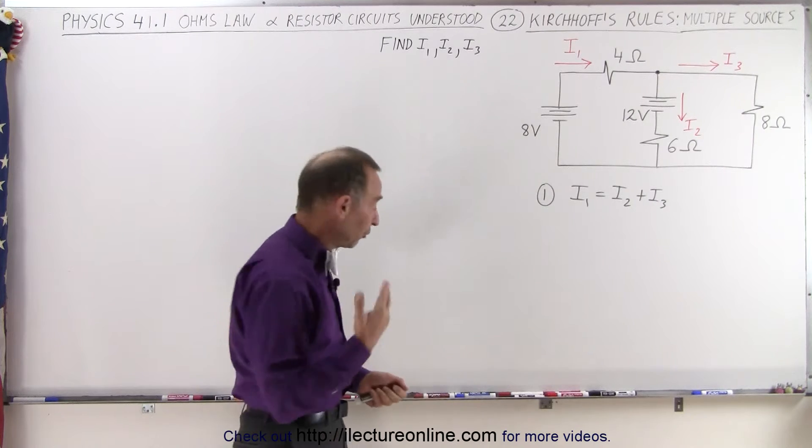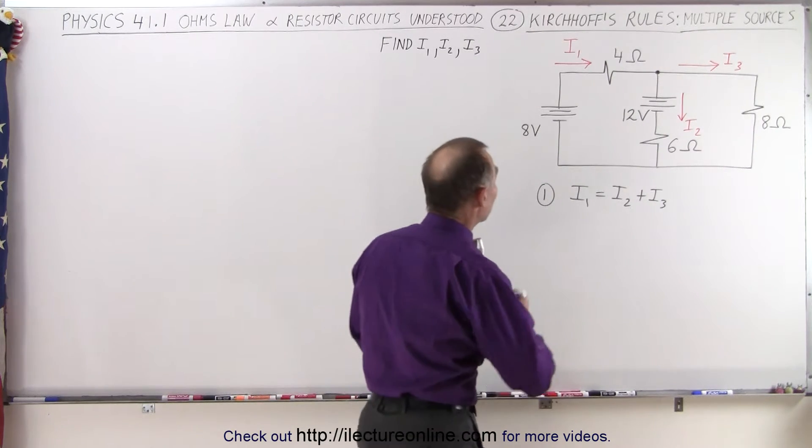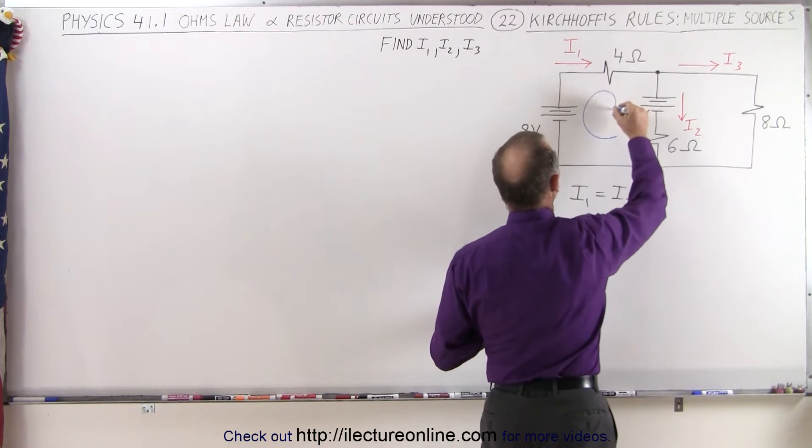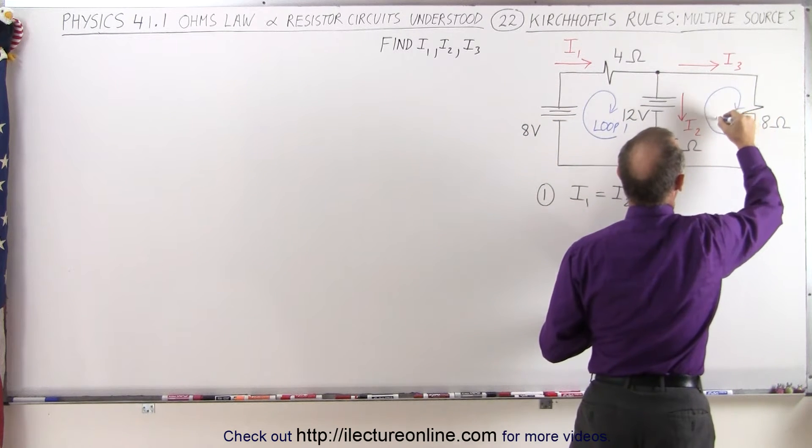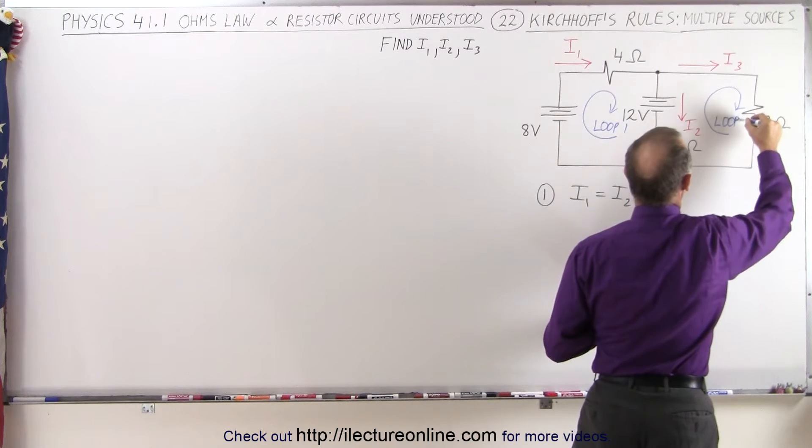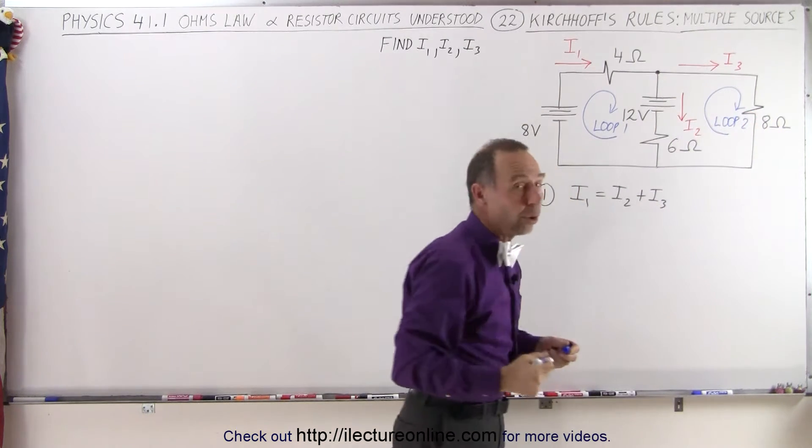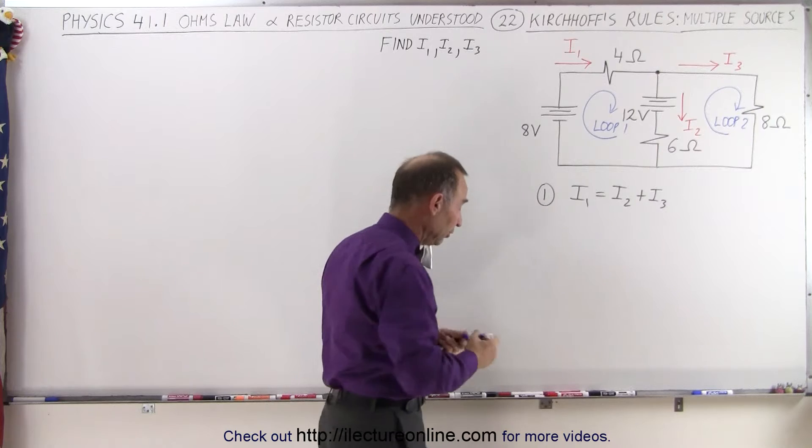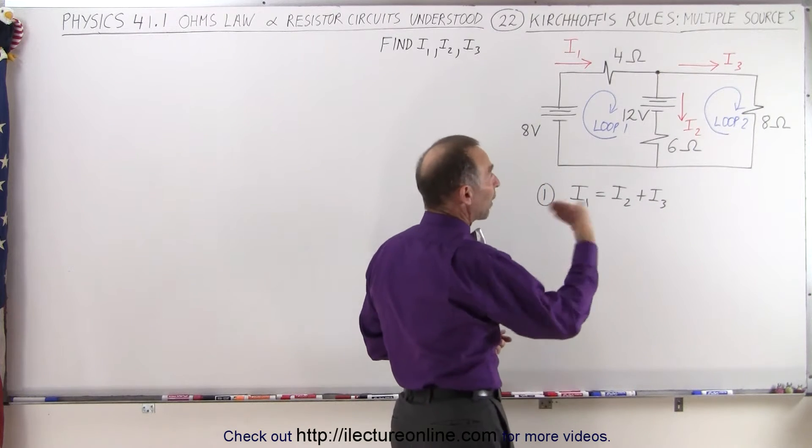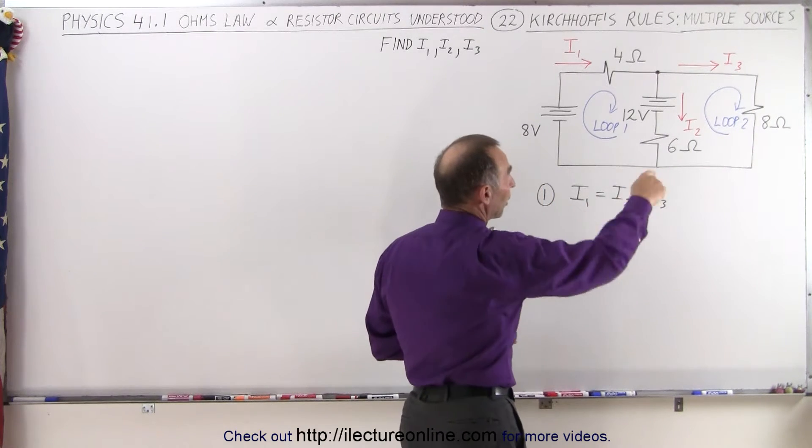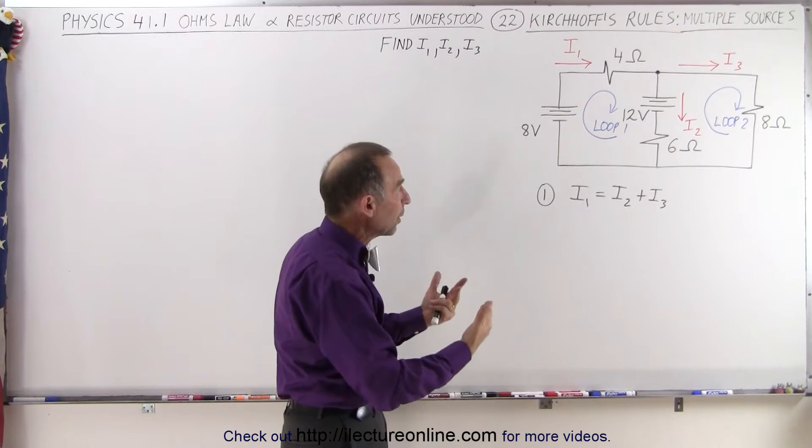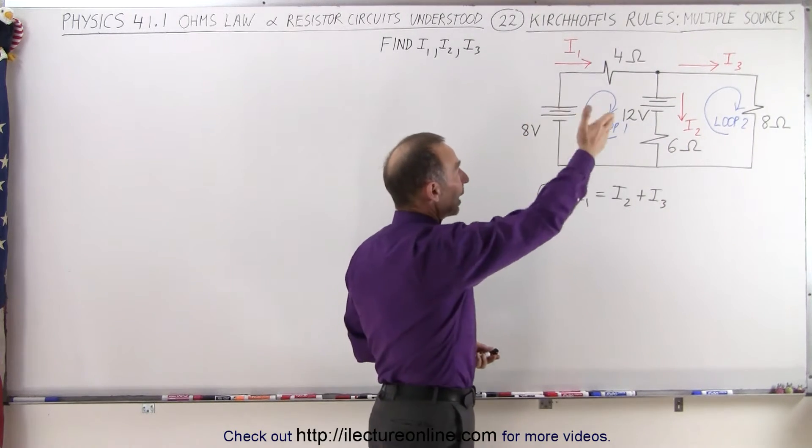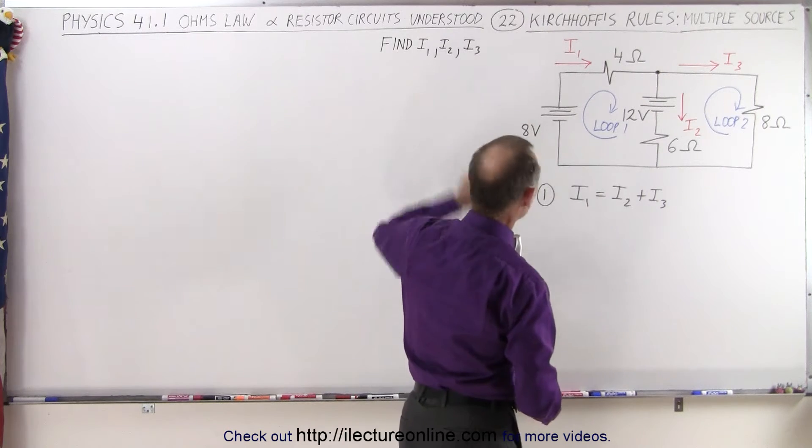We need two more equations. So for that, we need the two loop equations. Let's call this our loop one and here our loop two. Notice I do indicate the direction that I'm going to take as I go around the loop, and that is very important. We're going to add up all the voltage rises and all the voltage drops around each of the two loops for the other two equations. So we'll have three equations and three unknowns, I1, I2, and I3, which is what we're looking for.